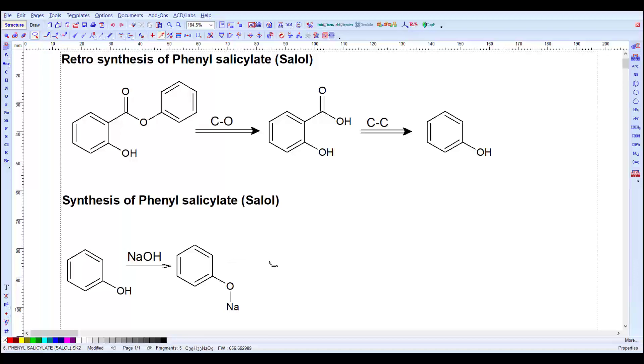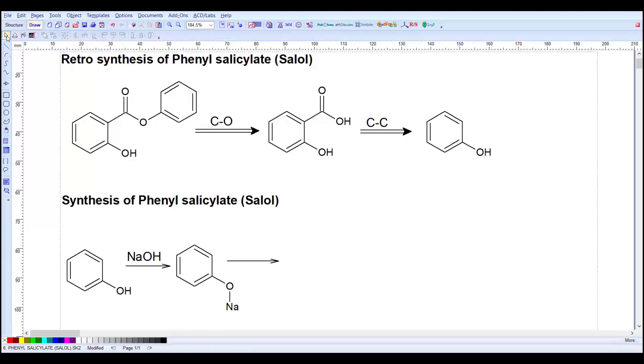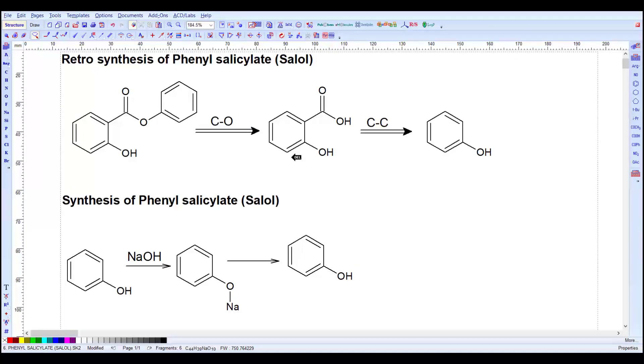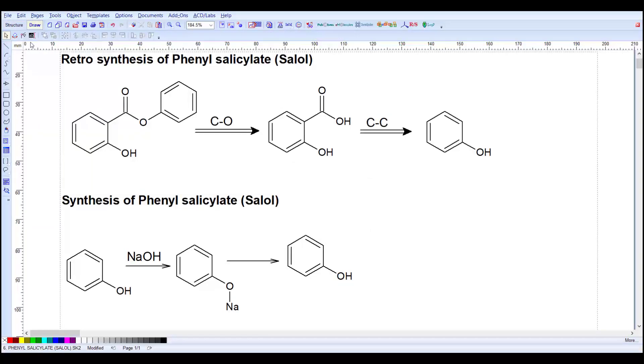Here we add the arrow and complete our two steps which is carboxylation as well as acidification. In the first we pass CO2 and use H plus. Use strong acid to make it carboxylic acid. For that we need to copy this one. Paste it here and make it our desired product. We have to copy here, delete this whole stuff and copy this. Paste it here very easily. This saves our lots of time.